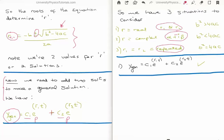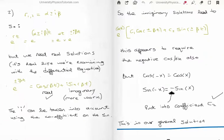The general form of the solution is two particular solutions added together. If we have real values for r, we just plug them in and get c1·e^(r1·t) + c2·e^(r2·t). We sum them together and we get the general solution. When we have real solutions to the quadratic equation, the solution for y is very simple.